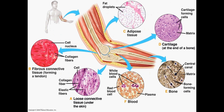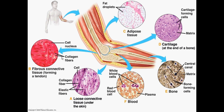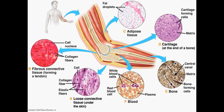The areolar tissue also helps with the diffusion of oxygen and nutrients from blood vessels. Muscles are connected to bones by tendons, which are fibrous connective tissue, and bones are connected to bones with the help of ligaments. The adipose tissue provides cushioning around body organs and gives shape to the body limbs. As you can see in this figure, the white fat cells fill the space between skin and muscles, providing a cushioning and insulating effect.